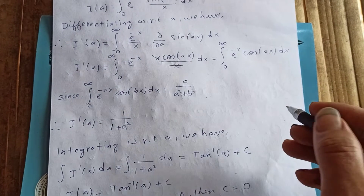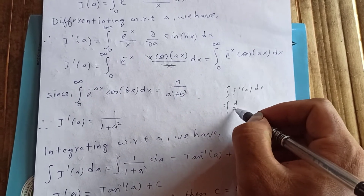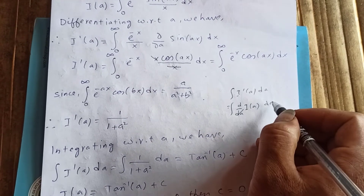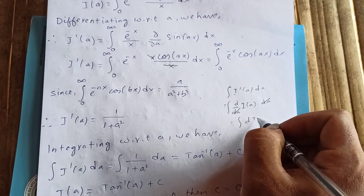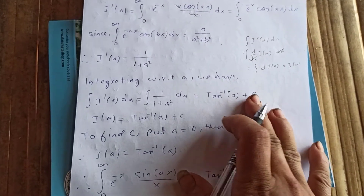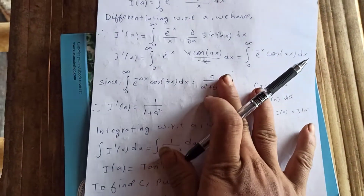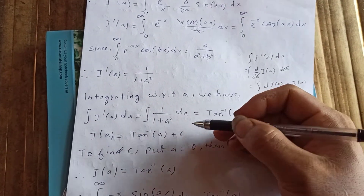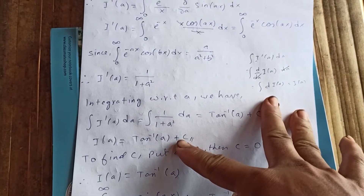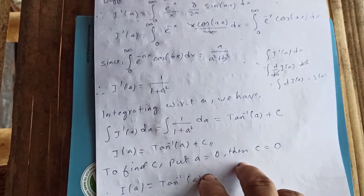We know that integrating I prime of a with respect to a recovers I(a), because I prime of a is the derivative of I(a) with respect to a — so integrating d of I(a) gives I(a). Now, I(a) is a definite integral, but we obtained it with a constant C from the indefinite integration, so we need to determine that constant C.